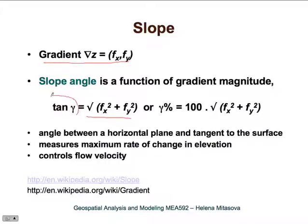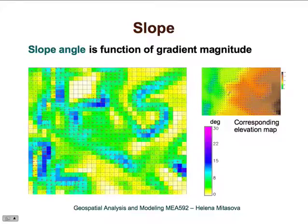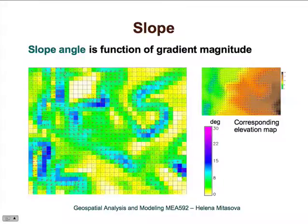Slope angle is a function of gradient magnitude. We compute the length of the gradient vector as the square root of the squared difference in the x-direction plus the squared difference in the y-direction, which defines the tangent of the slope angle gamma. We often use slope in percent. Slope is the angle between a horizontal plane and the tangent to the surface, and it measures the maximum rate of change in elevation. It is an important parameter because it controls flow velocity. For example, if our elevation map shows brown for higher elevation and green for lower elevation, the corresponding slope map will show values expressed in degrees.